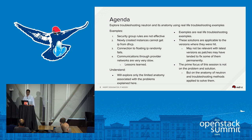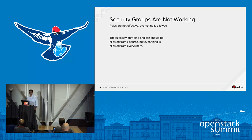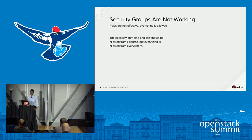Let's go ahead to our first problem: Neutron security group rules are not effective. The problem is that I created a Neutron security group, added some rules into it, and created an instance using that security group. When I tried to reach the instance, the rules I specified for SSH and ping were working. But the problem is that all other network communication to the instance was also working. This means the security group rules are not effective.